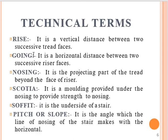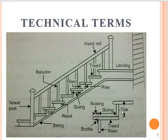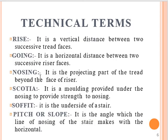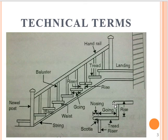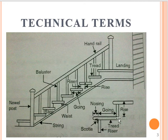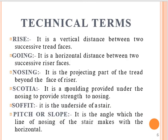The tread is the horizontal distance between successive riser faces. Nosing is the projecting part of the thread beyond the face of the riser surface. It is the molding provided under the nosing to provide strength to the nosing.